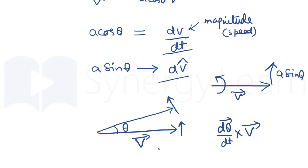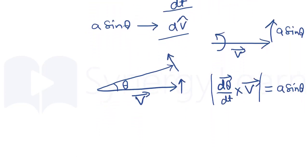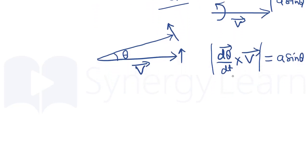We may have any other vector in place of velocity — be it position, angular momentum, or momentum. So the quantity dθ/dt cross V has magnitude equal to A sin theta, which was perpendicular to the vector and brought about the change in direction. We can simply call this omega cross V, with magnitude equal to A sin theta.